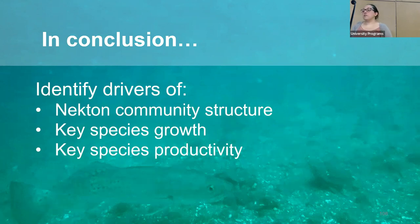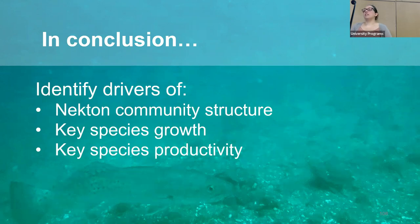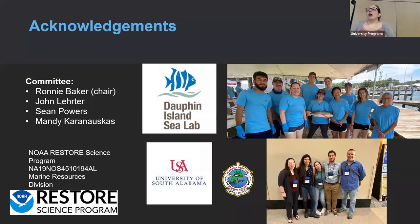In summary, this dissertation identifies drivers of necton community structure, key species growth, and key species productivity. Identifying what environmental factors most affect each of these things helps scientists and managers understand the impacts of long-term climate change on our local necton. Not only will this work identify environmental drivers, but it will also create predictive models of growth and productivity to hopefully aid in management decisions. Species-based approaches have an important place in research and management, but environmental factors affect individual populations within the ecosystem and these populations affect one another, so by studying long-term changes at the ecosystem level we gain a fuller understanding of the dynamics at play.